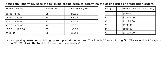The question asks: a cash-paying customer is picking up two prescription orders. The first is 30 tablets of drug P; the second is 90 capsules of drug L. What will the total be for both orders? The first thing to do is recognize that there are two separate calculations needed — one for each drug — and then at the very end we simply add the cost of those two drugs together to get the answer.